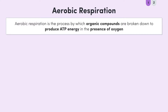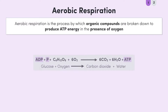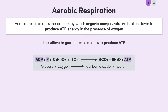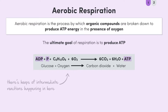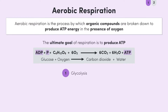The process of aerobic respiration can be summarised like this: glucose plus oxygen makes carbon dioxide plus water. And remember, the ultimate goal of respiration is to produce ATP. In reality, there are actually lots of other intermediate reactions going on behind the scenes. I'll take us on a journey through these intermediate stages.